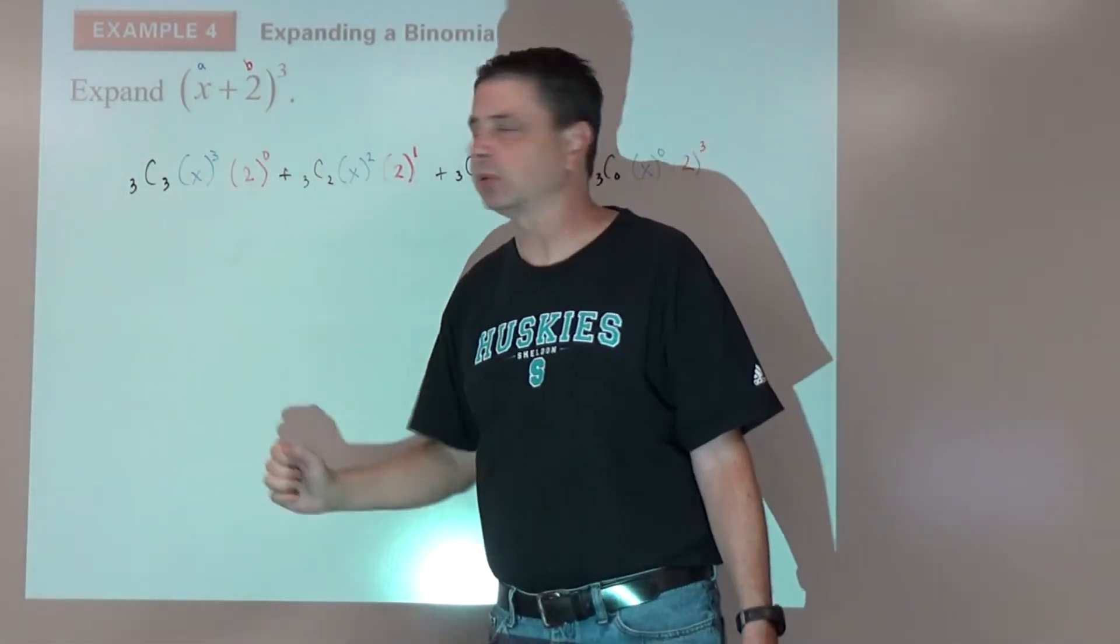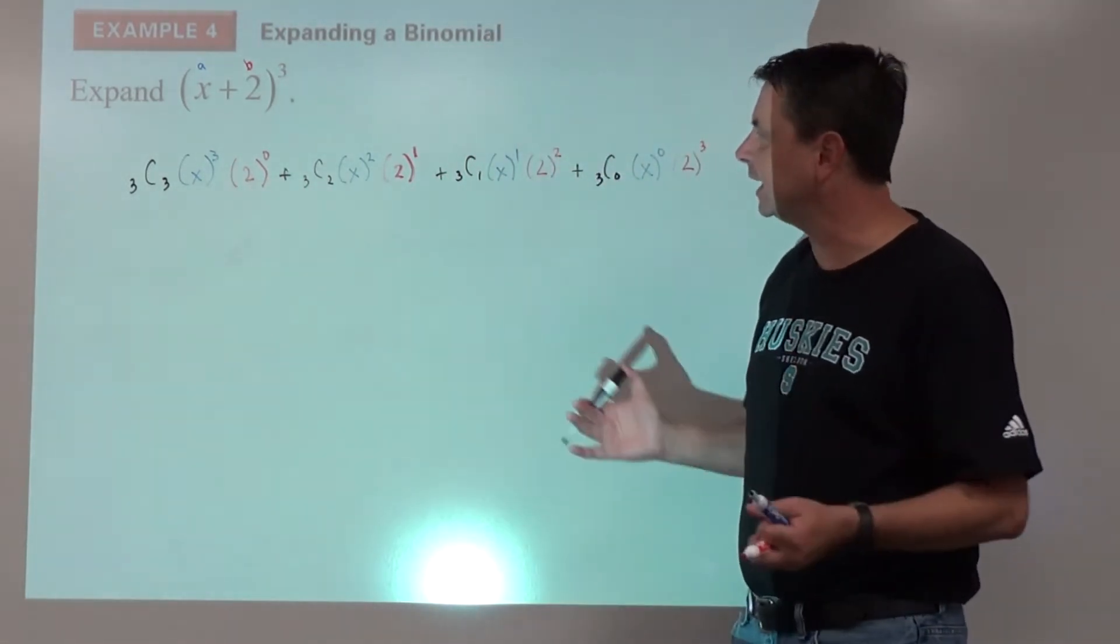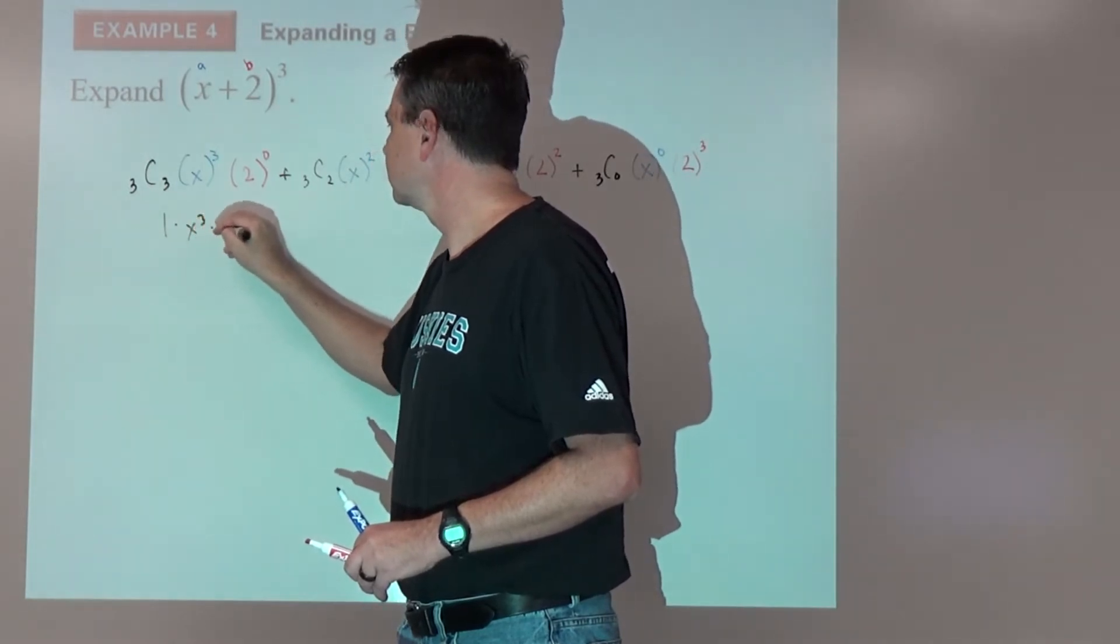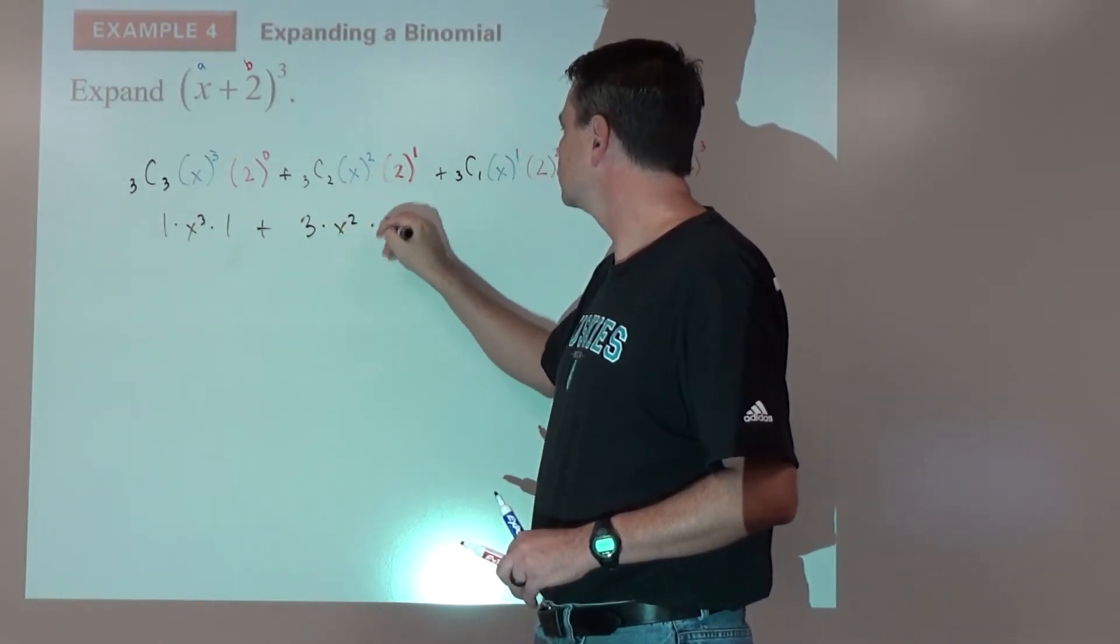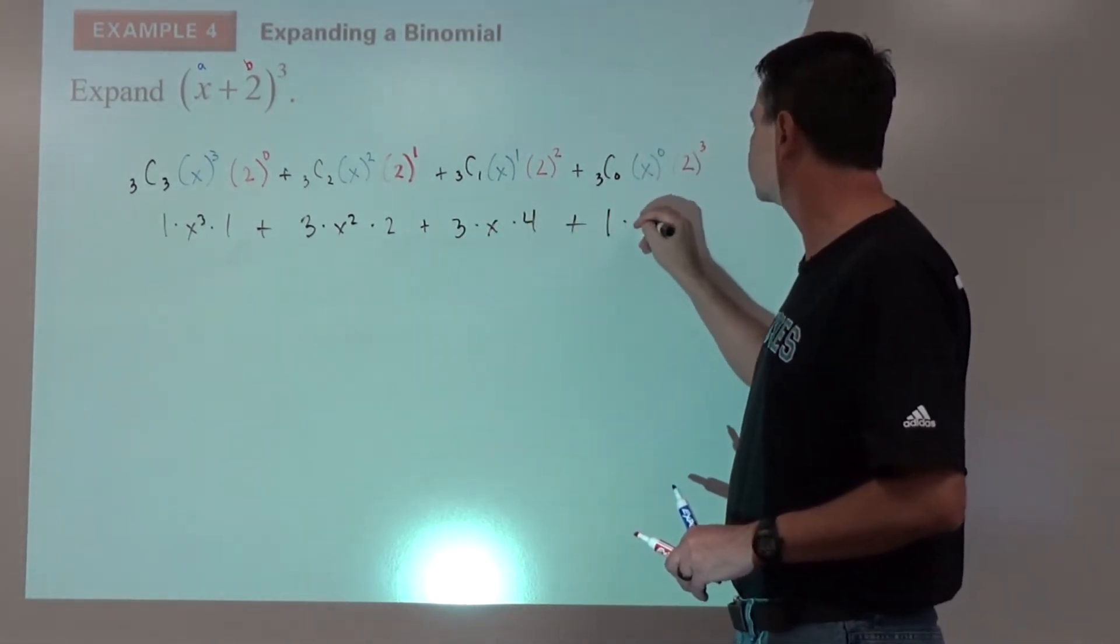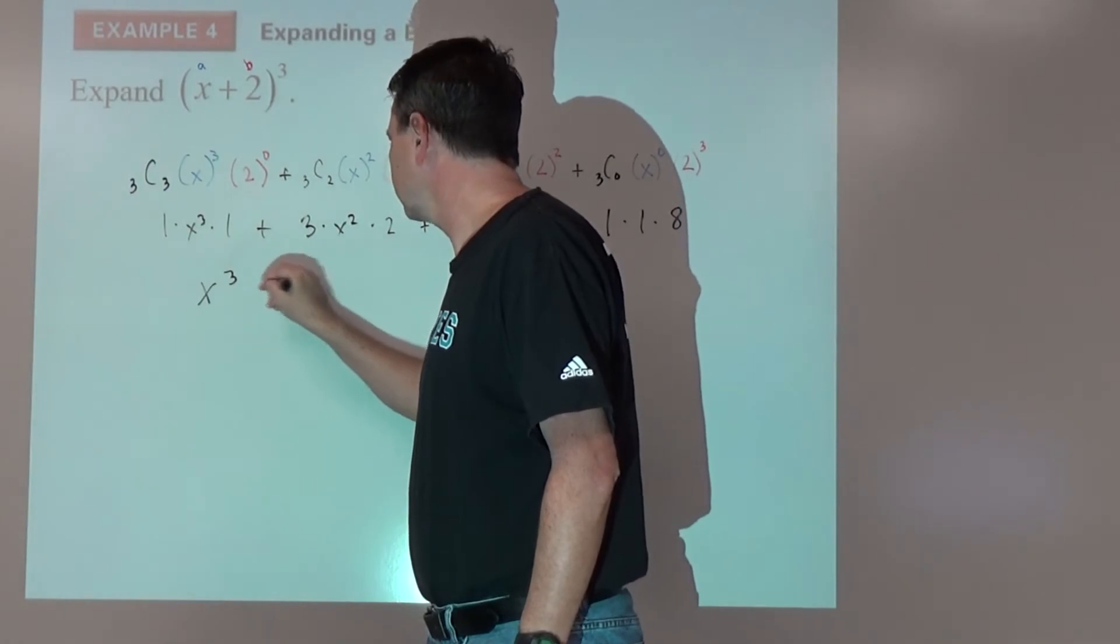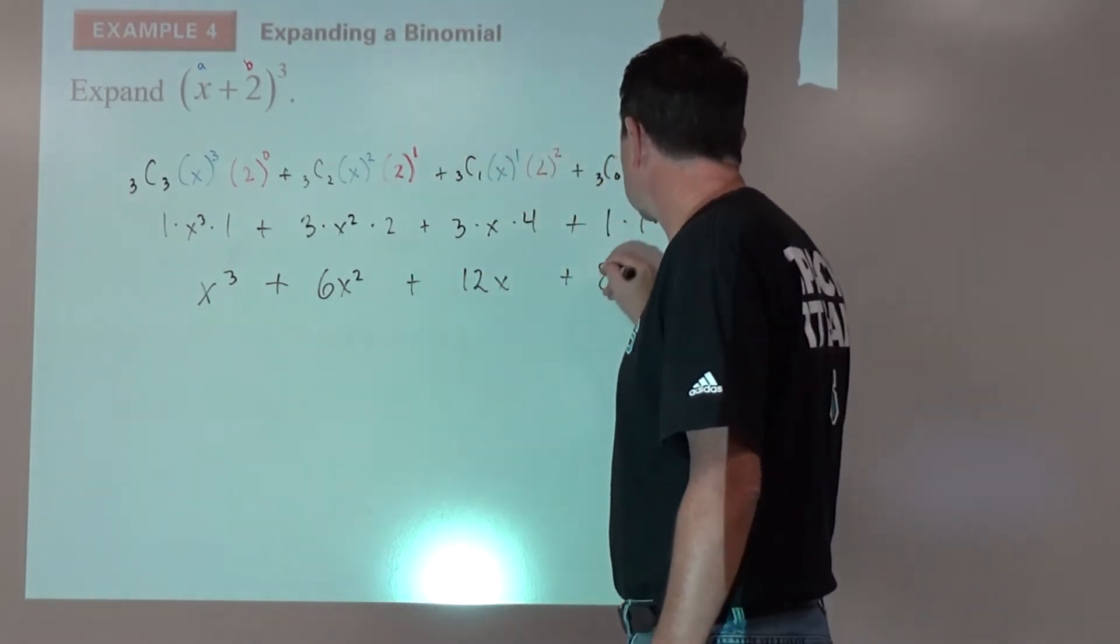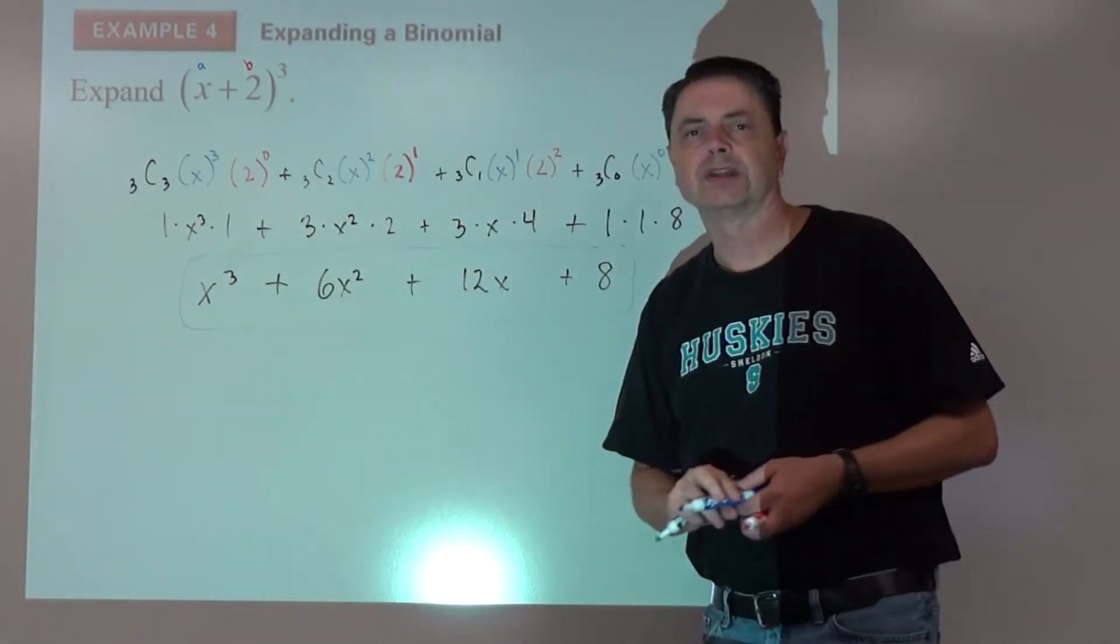So now we can go ahead and just kind of simplify. If you did on the calculator, three C three is one times x to the third, times one, plus three, times x squared, times two, plus three, times x, times four, plus one, times one, times eight. So for a final answer, x to the third, plus six x squared, plus 12x, plus eight. And there's the expansion.